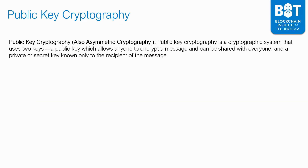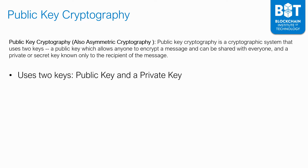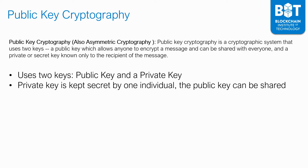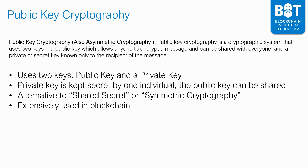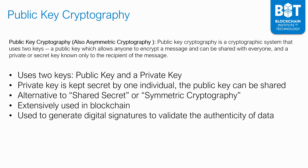Public key cryptography, also known as asymmetric cryptography, is a cryptographic system that uses two keys: a public key, which allows anyone to encrypt a message and can be shared with everyone, and a private or secret key known only to the recipient. The private key is kept secret by one individual; the public key can be shared with anybody. It's extensively used in blockchain and is also used to generate digital signatures to validate the authenticity of data — only the person with the private key can sign a document or file.